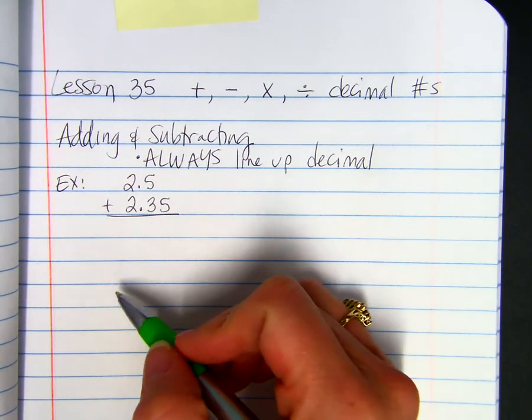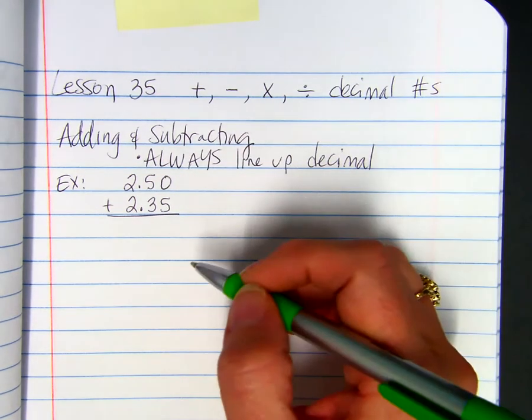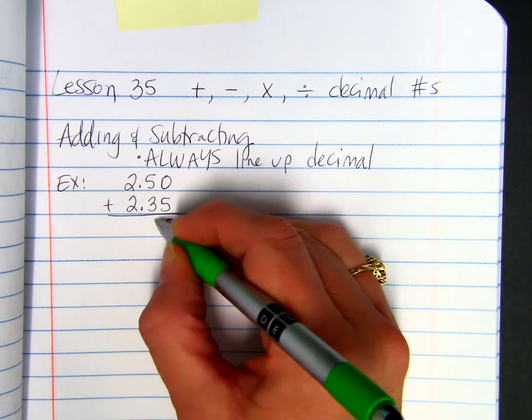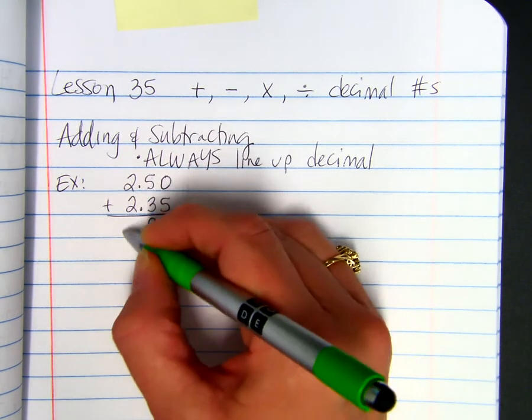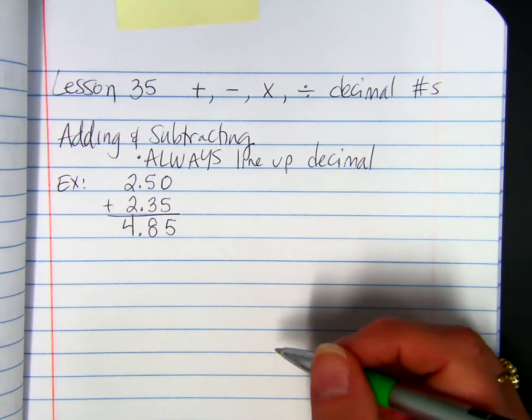So, you're allowed to put in the terminating, terminal zeros. So, you could put a zero there if you want. 0 plus 5 is 5. 5 plus 3 is 8. 2 plus 2 is 4. So, the decimal needs to come straight down.